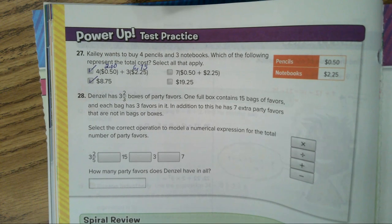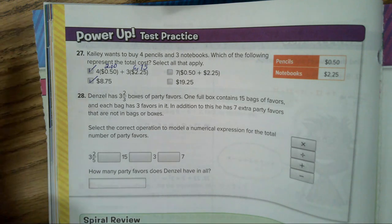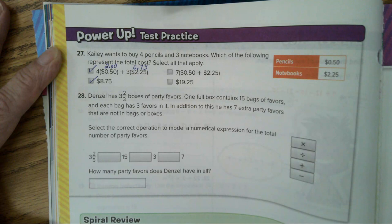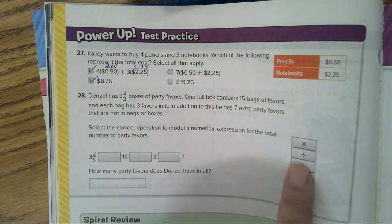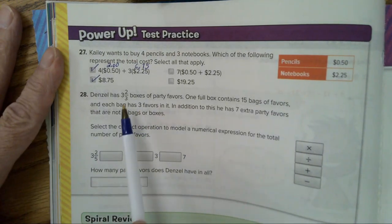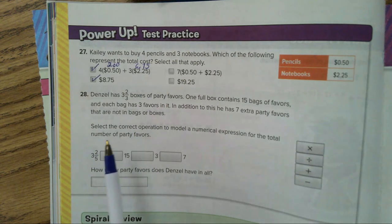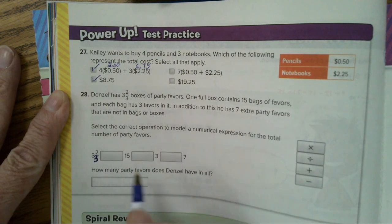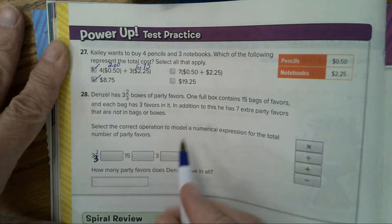Number 28, Denzel has three and two thirds boxes of party favors. One full box contains 15 bags of favors. And each bag has three favors in it. In addition to this, he has seven extra party favors that are not in bags or boxes. So three and two thirds, I think there's a mistake that should say two thirds. And we have 15 bags. One full box has 15 bags.